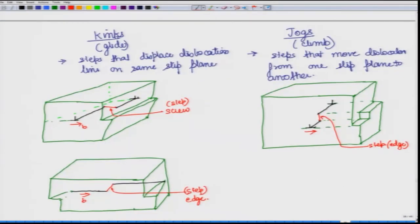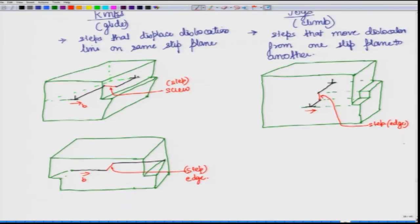What we have here is an edge dislocation. This is a jog - remember that on the left side we have all the kinks, on the right side what we are drawing is the jogs. In the jogs, for an edge dislocation the jog is also an edge dislocation. Next we want to draw the jog for a screw dislocation.